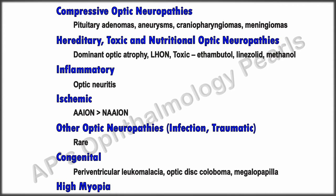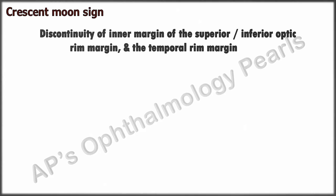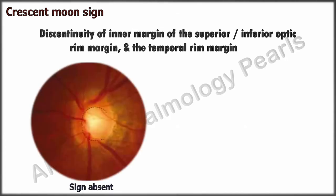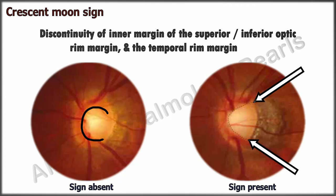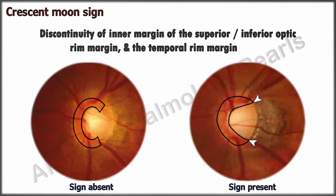Determining the presence of glaucoma in a myopic disc is extremely difficult, and visual field and OCT correlation with periodic evaluation for progression is often necessary, as some cases of myopia have glaucoma-like field defects. In this respect, Kim et al. described the crescent moon sign to help screen for early detection of glaucoma in patients with myopic tilted discs. The crescent moon sign is a discontinuity between the inner margin of the superior and/or inferior optic rim and the temporal rim margin. When this sign is present, the superior-nasal-inferior rim looks like a crescent moon.